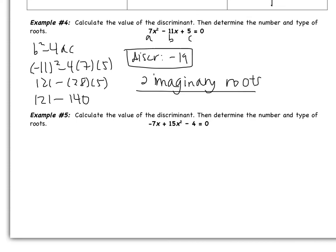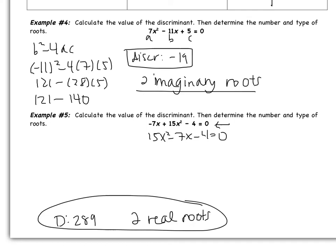Pause the video and try example 5 on your own. My hint is to rewrite the quadratic in the correct order. Rewriting, you should have gotten 15x squared minus 7x minus 4 equals 0. The discriminant you should have gotten is 289, which tells us there are two real roots. When you come to class tomorrow, we will check that you have all the correct work and answers. If you didn't get 289, go back and fix it. Good luck!